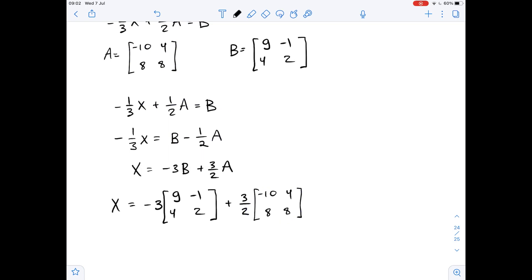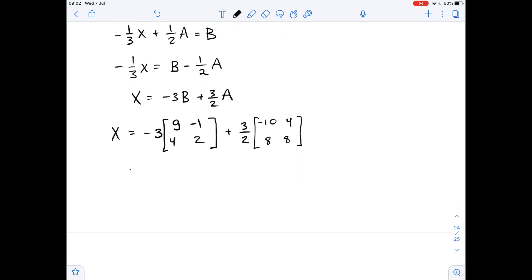So first we do the multiplication by scalar and we get negative 27, 3, negative 12, negative 6 plus negative 30 over 2 which is negative 15. Then 12 over 2 which is 6. Then 24 over 2 which is 12.